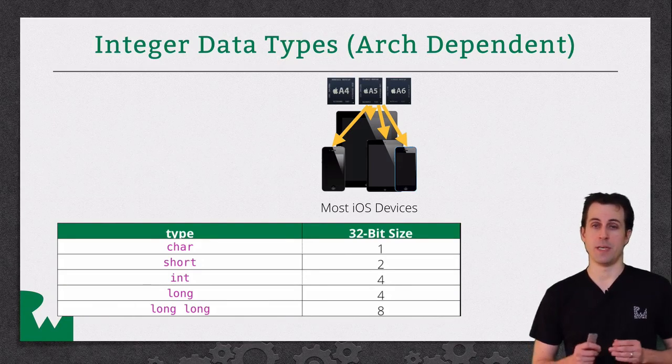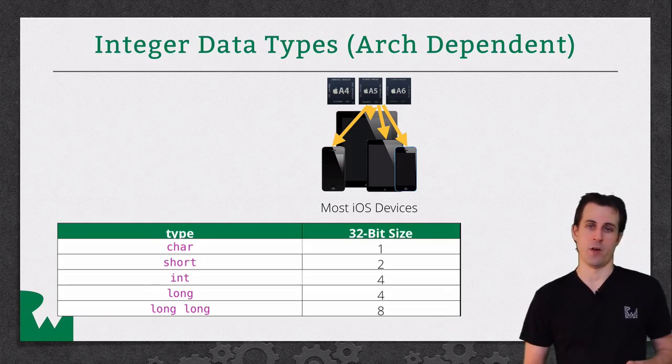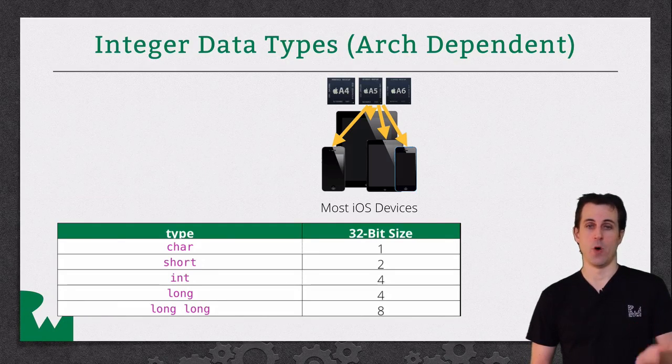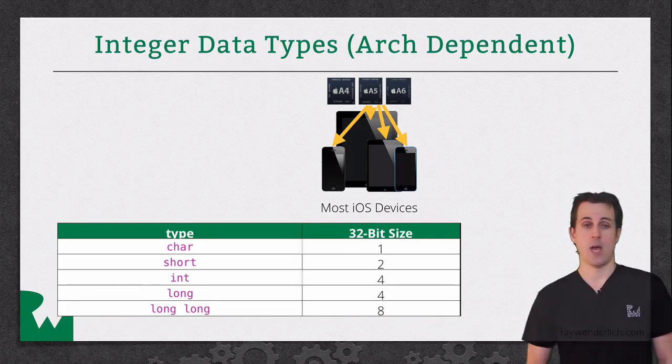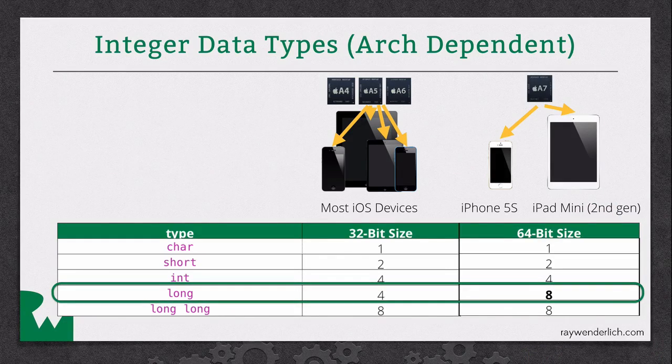In the old days, every iOS device ran on a 32-bit OS, so you always knew these sizes. However, recently Apple has introduced some new devices like the iPhone 5S and the iPad mini Retina version that have a 64-bit OS. Because of this, the size of one of these architecture-dependent data types, which is long, has changed. In 32-bit OS, it used to be four bytes, and in 64-bit OS, it's eight bytes. So you can no longer assume it's only four bytes, because you want to write apps that work on both architectures.